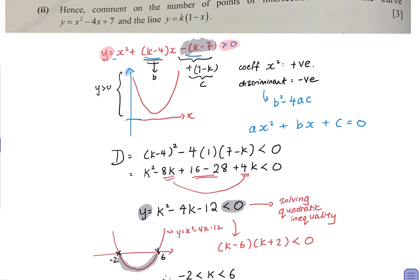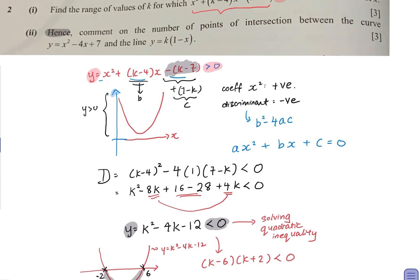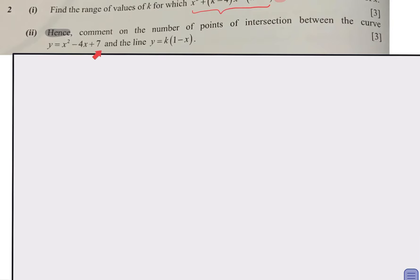Now for part two: comment on the number of intersections between the curve y equals x squared minus 4x plus 7 and y equals k times 1 minus x. Notice they use the word 'hence,' meaning there is a connection with part one. To solve for points of intersection, we equate the two equations simultaneously.